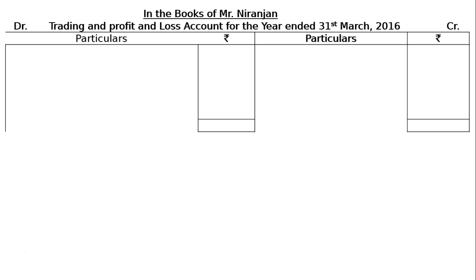After drawing the account, we have the first adjustment: closing stock Rs 75,000, which is a trading account item. It will be shown on the credit side of the trading account and also as a current asset. Adjustment 3 tells us outstanding wages of Rs 5,000, which will be added to wages in the trading account. We will finish these two adjustments first and then proceed to the profit and loss account, discussing the other adjustments along the way.